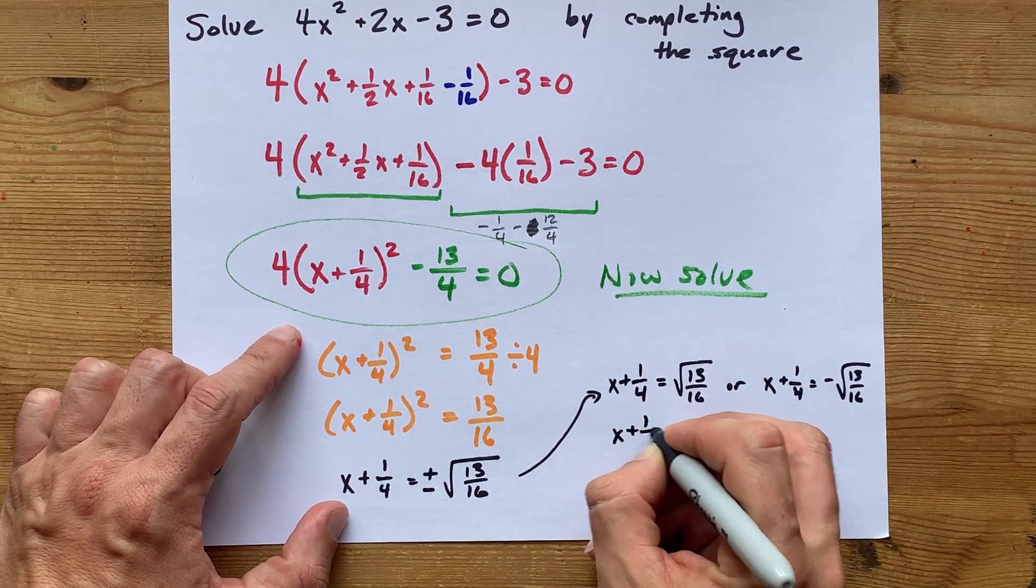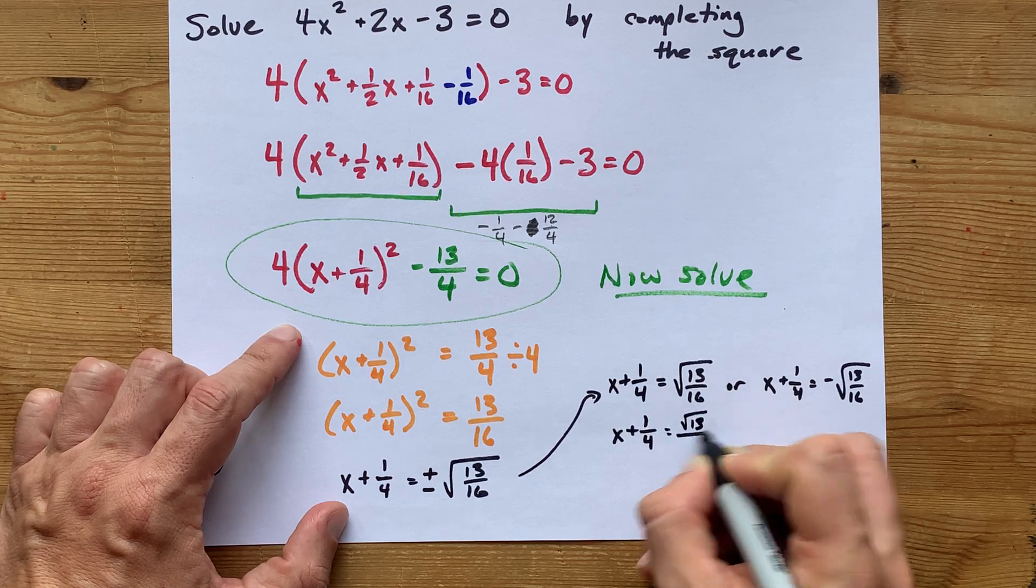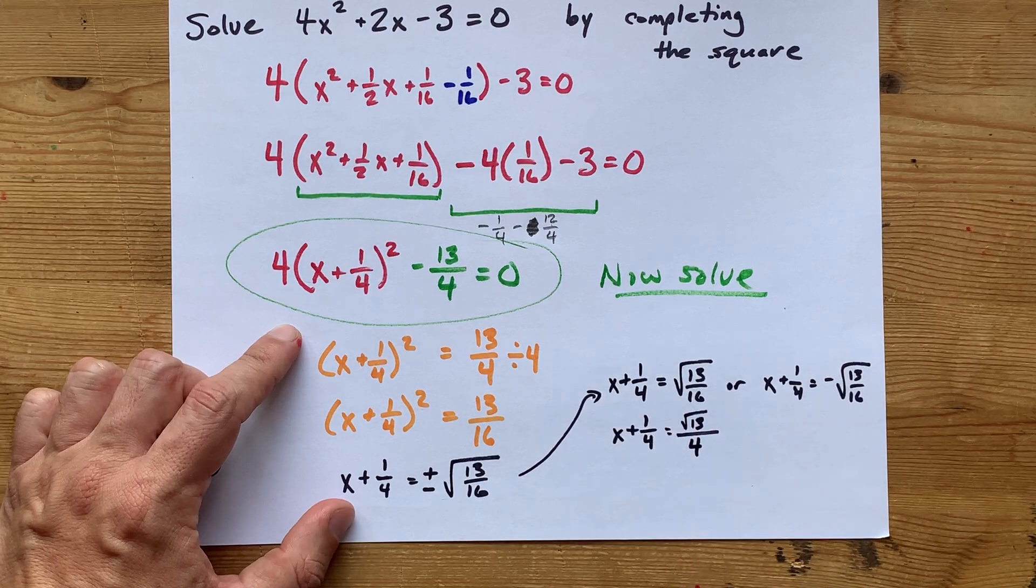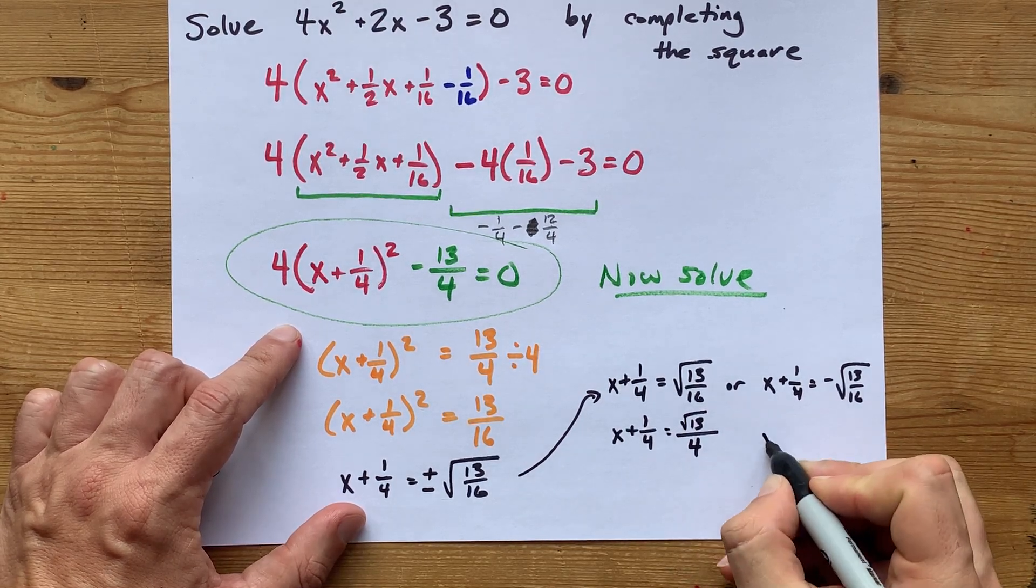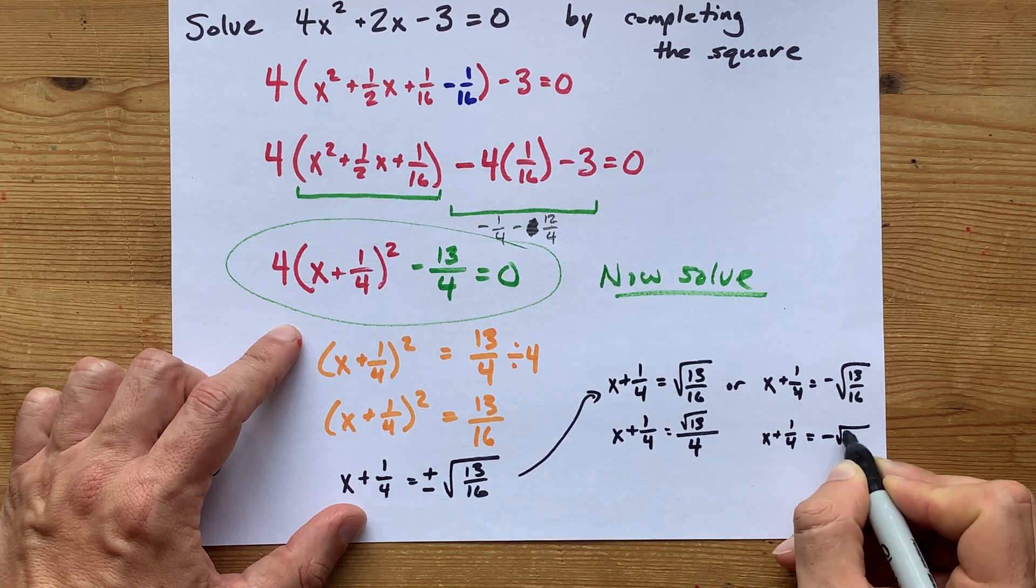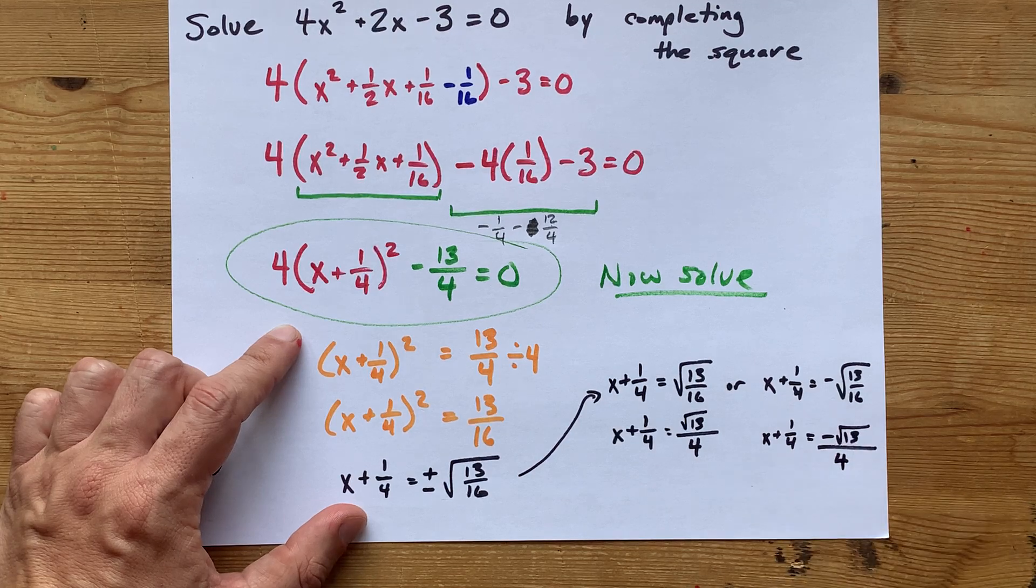So, what I'm going to do here is X plus a quarter equals the square root of 13. And I'm actually going to take the square root of 16, so it's no longer underneath the square root sign. I'm going to do the same over here. This is X plus a quarter equals negative root 13, and divide that by the square root of 16, which is 4.